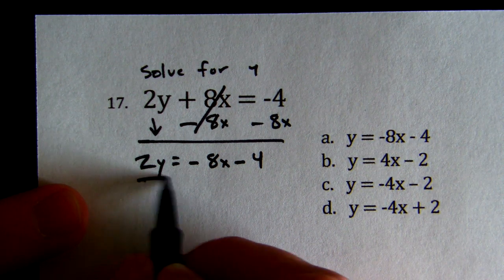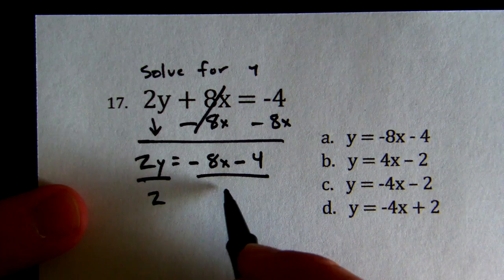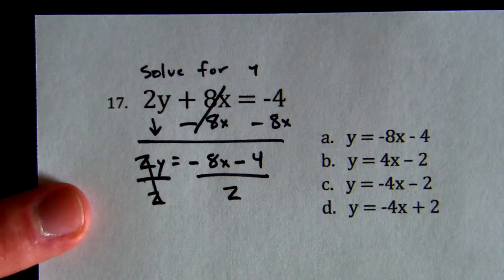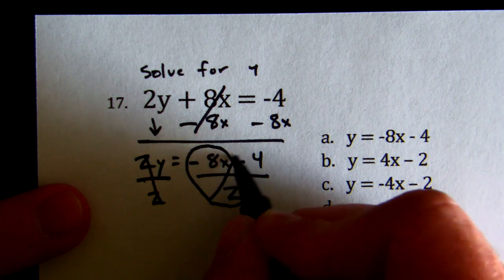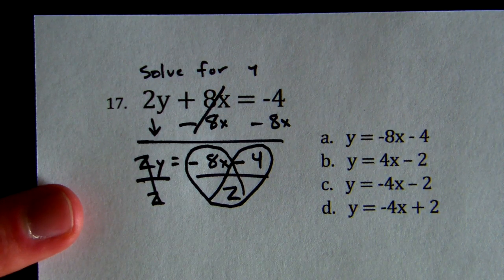I've got to get rid of the 2, so it's being multiplied, so I'm going to divide. Whatever I do to one side, I've got to do to everything on the other side. I'm going to divide each term by 2, and I have to make sure I keep the sign out front. I just made a heart because I love math.